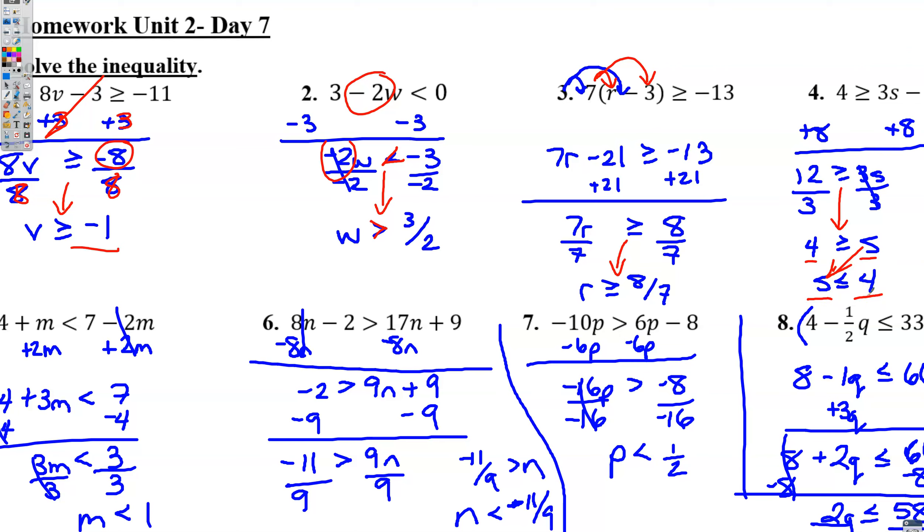All right. On 5, 6, and 7, there are variables on both sides. So the first thing you're going to do on each of these is move the variables, or move one of the variables so it joins the other one on the other side of the equation. Once you've done that, then you move things away from the variables and make sure to flip the sign if you multiply or divide by a negative number.